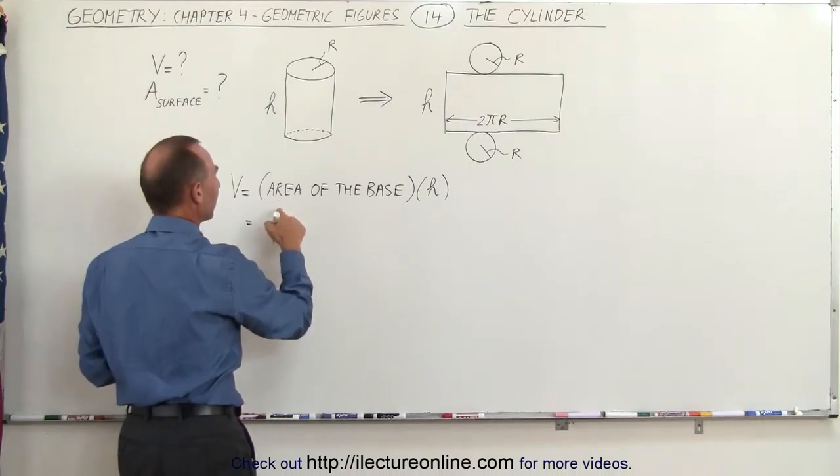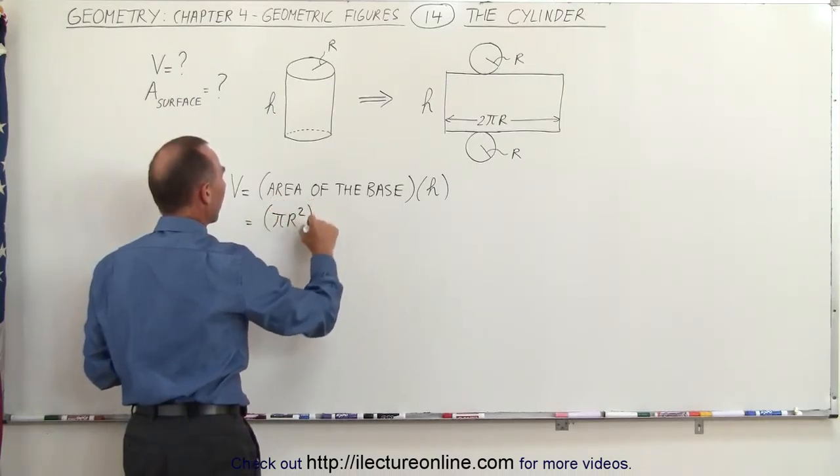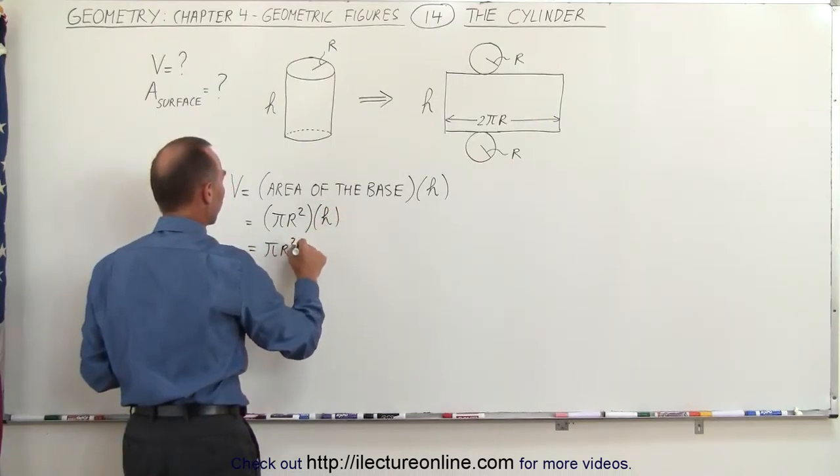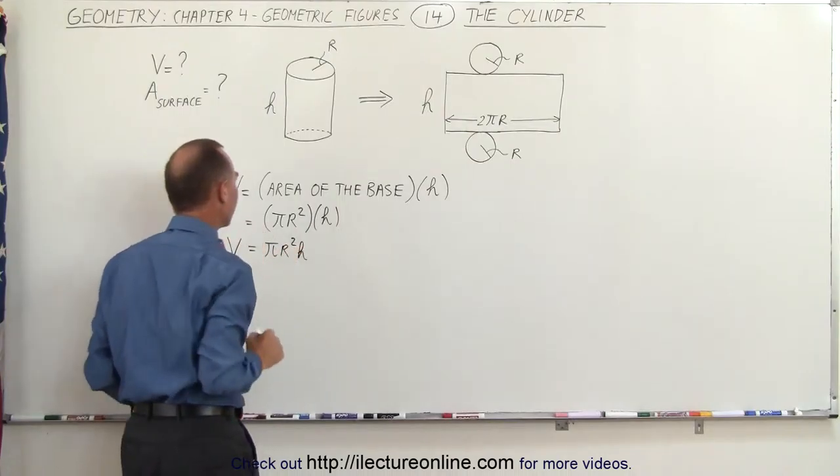This would then become the area of the base would be the area of the circle which is pi r squared and I'll multiply that times h. So essentially this becomes pi r squared h which is the volume of that.